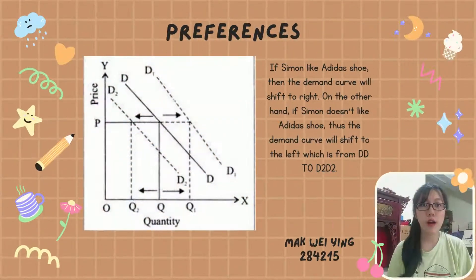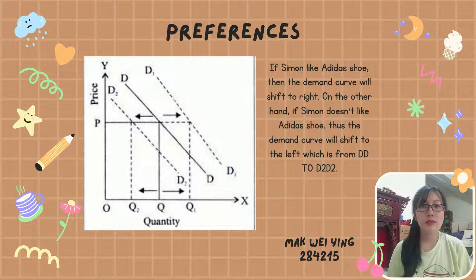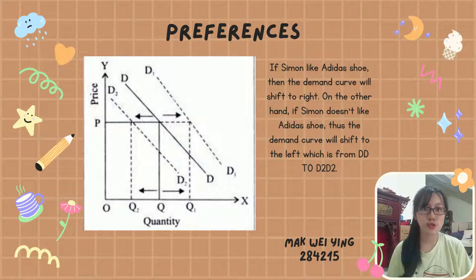Preference is another factor. It depends on the individual's taste for products. For example, if Simon likes Adidas shoes, the demand curve will shift to the right. However, if Simon does not like Adidas shoes, the demand curve will shift to the left, decreasing demand.